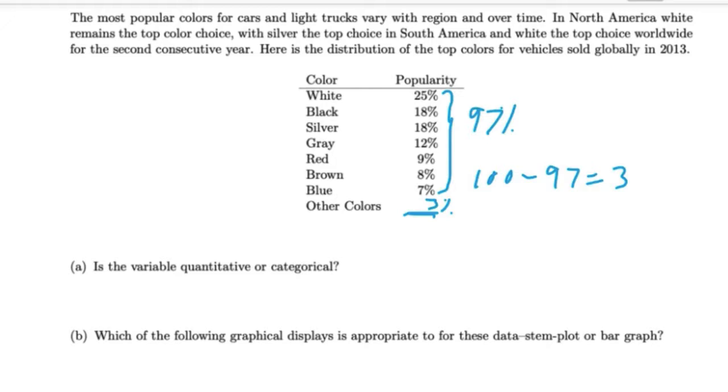Part A: Is the variable quantitative or categorical? First, understand the problem. We are talking about colors of cars, therefore our individual should be cars. What is the variable we observe? Colors of cars. Colors are different car to car, therefore our variable is colors. Colors is a categorical variable.